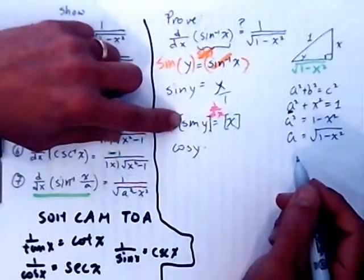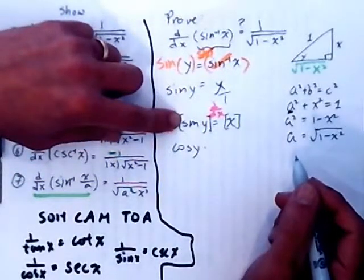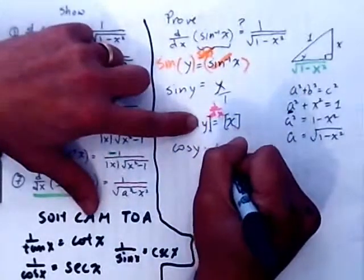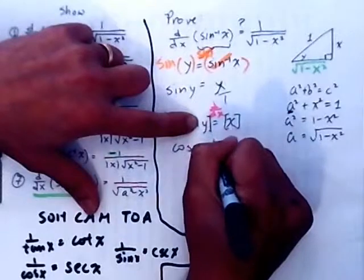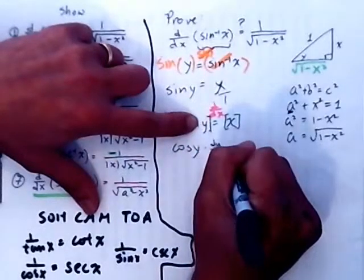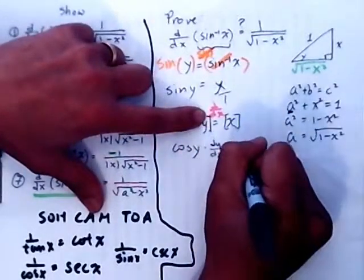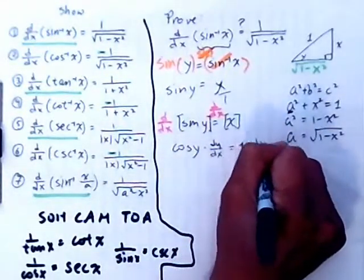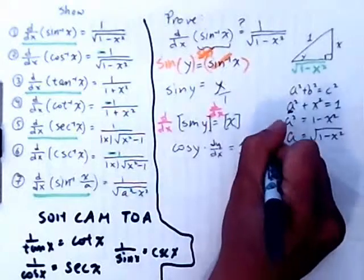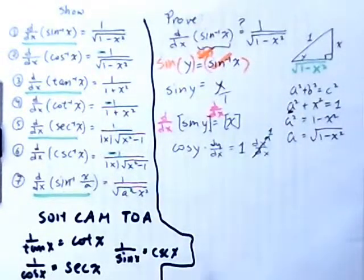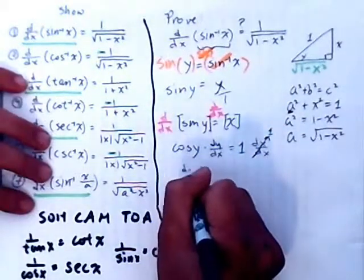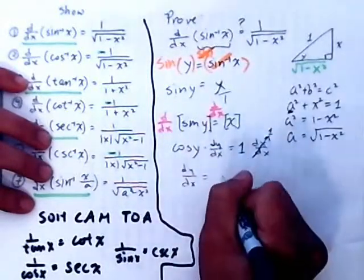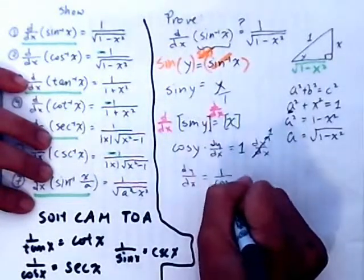The derivative of sine is cosine of y — you should know that by now. And the derivative of y, which is the chain portion, is going to be dy over dx. The derivative of x with respect to x is just 1. Solving for dy/dx by dividing by cosine, we end up with 1 over cosine of y.